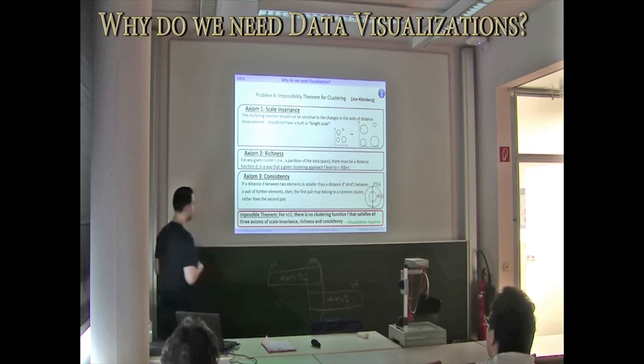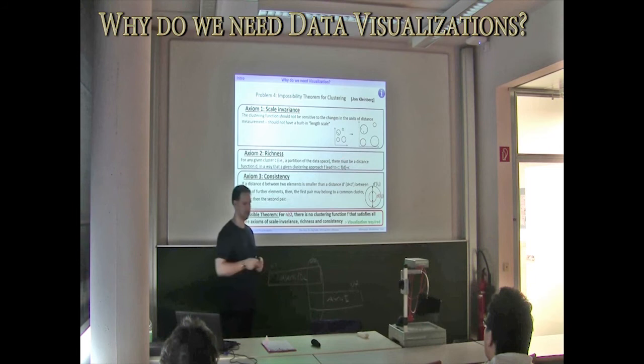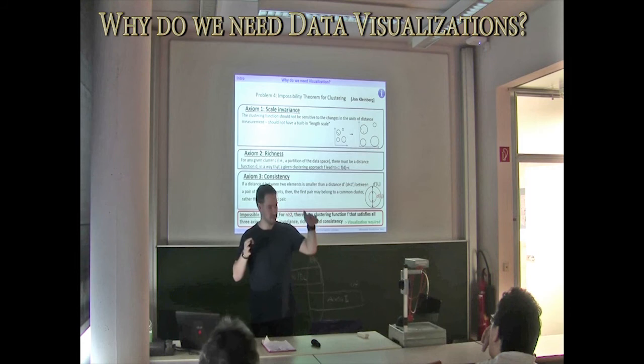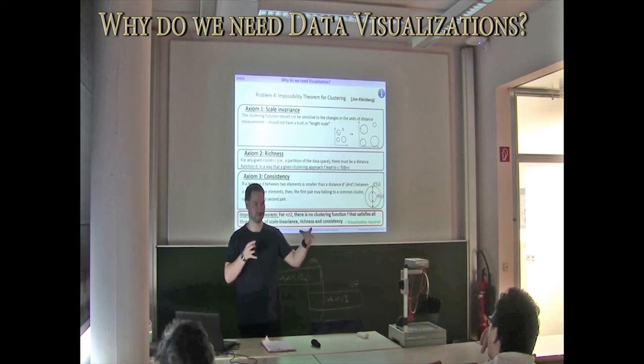The second axiom is richness. For any given cluster C, there must be a distance function D such that a given clustering approach F leads to this cluster C. This is a hard one. It means you decide, I have my data and I want to get this as one cluster. You need to look for a certain distance function that gives you the result.